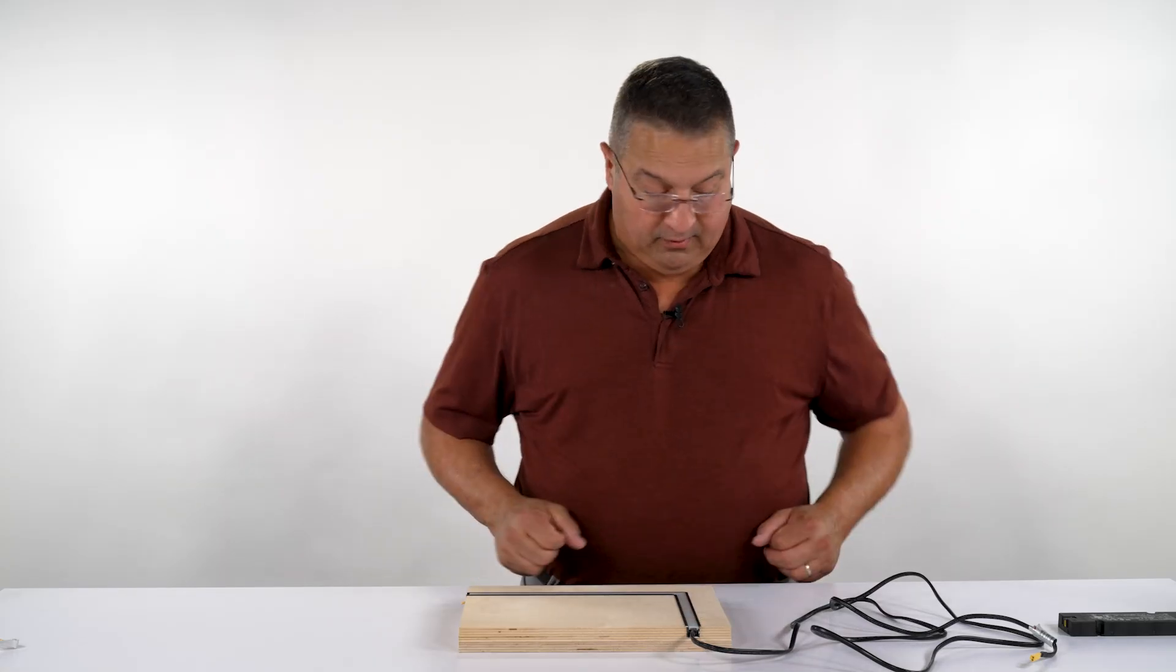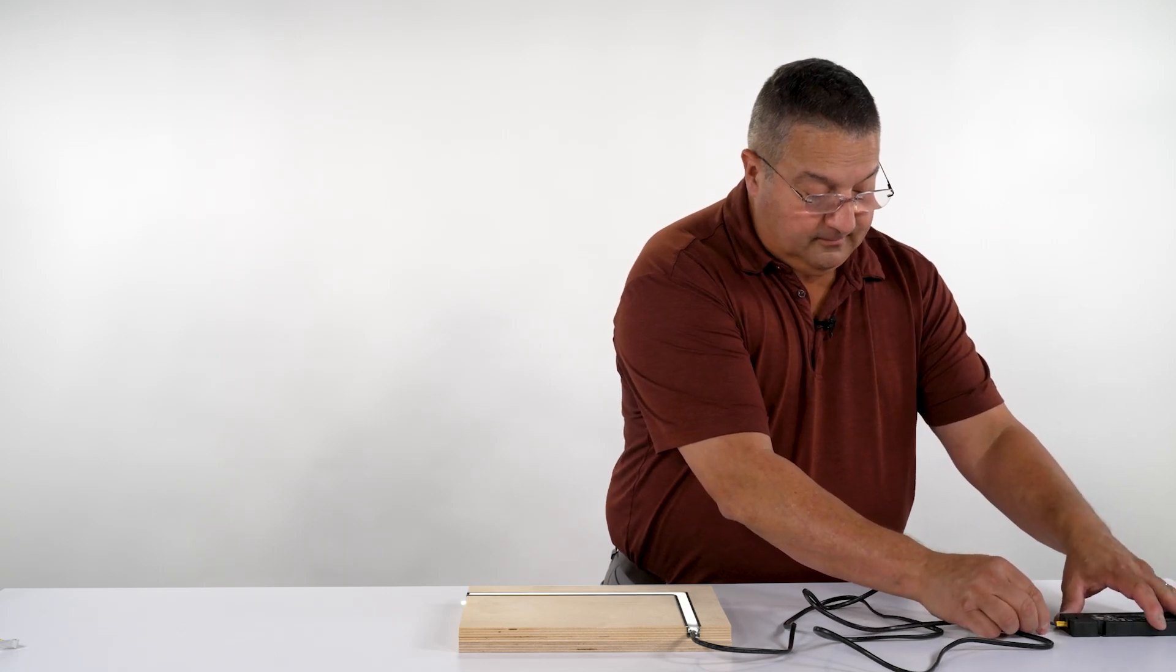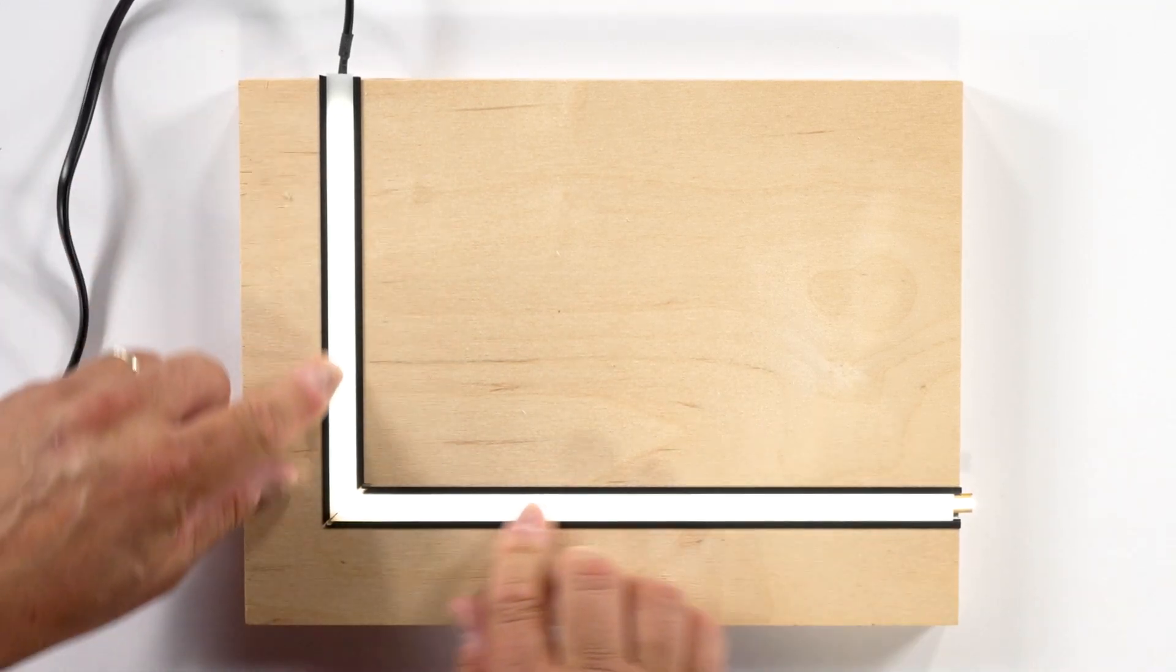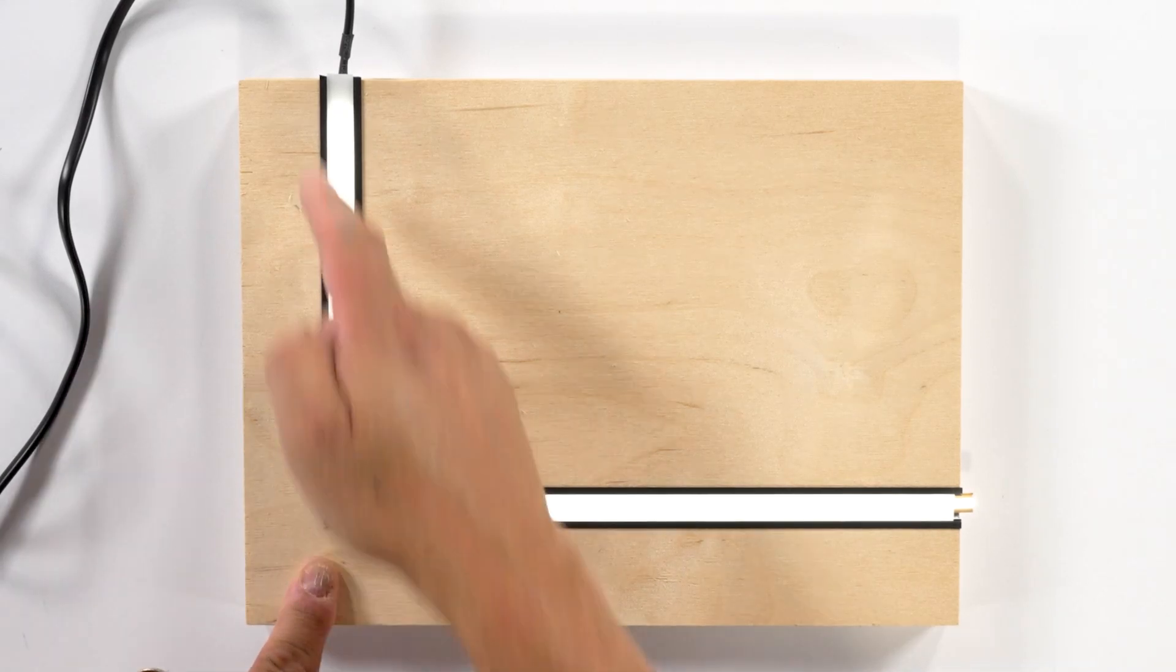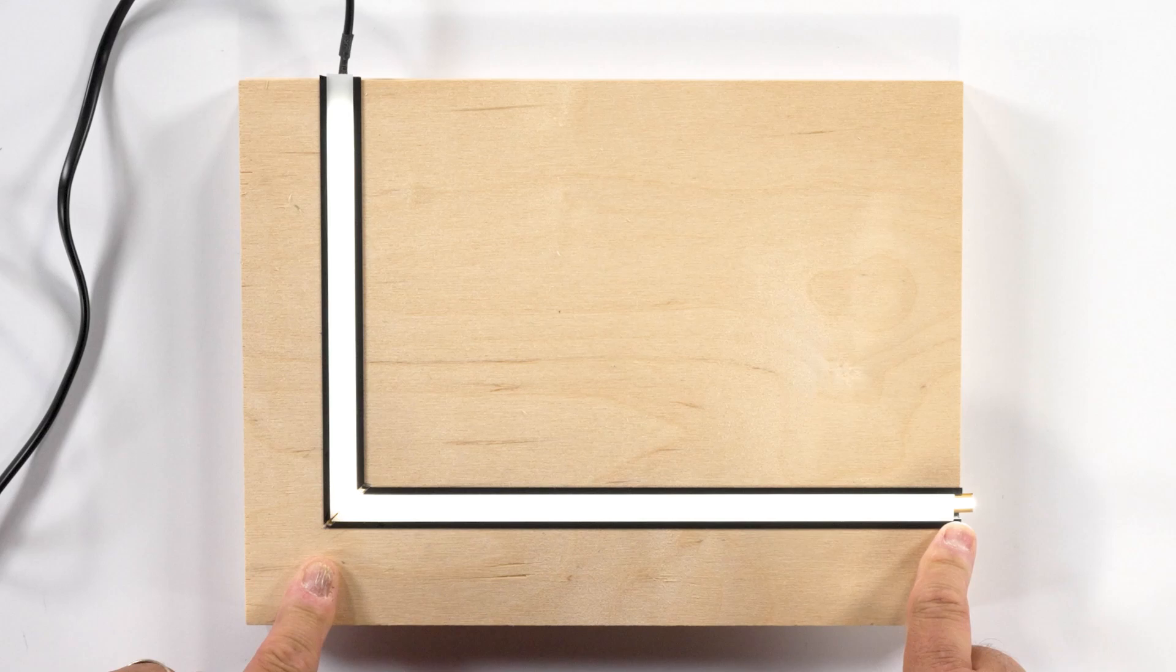The last thing to do would be to test the light into the application. Plugging it in. You see where the aluminum comes together, you see where the lensing comes together, and we have continuous light through the corner making a 90 degree bend.